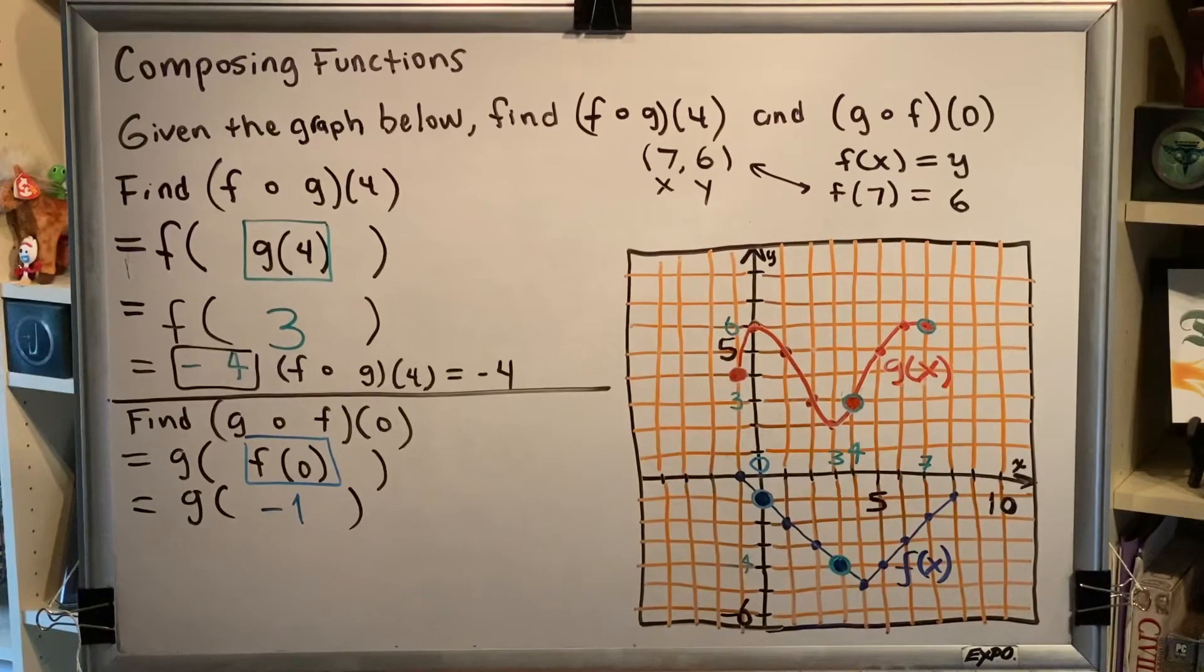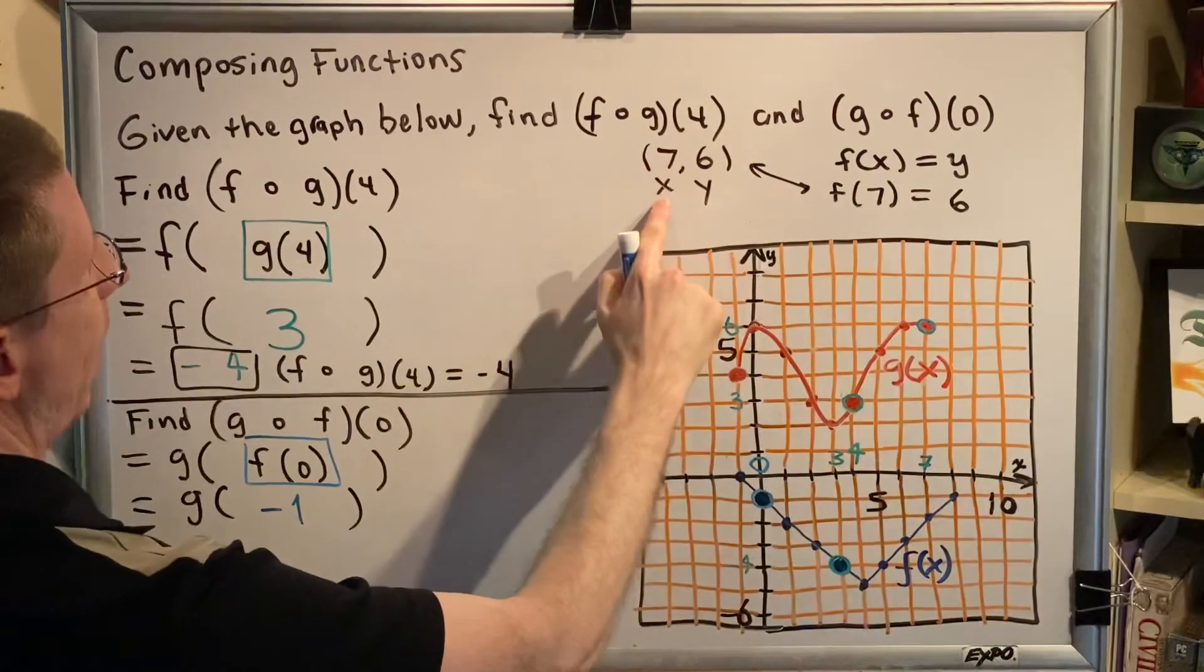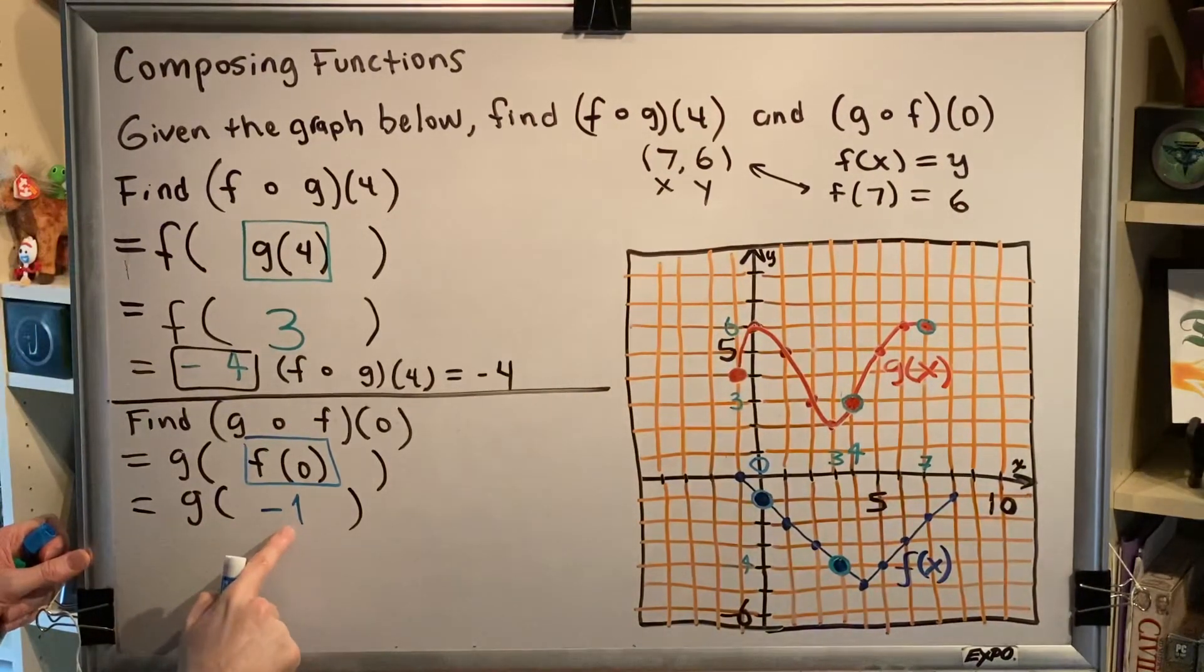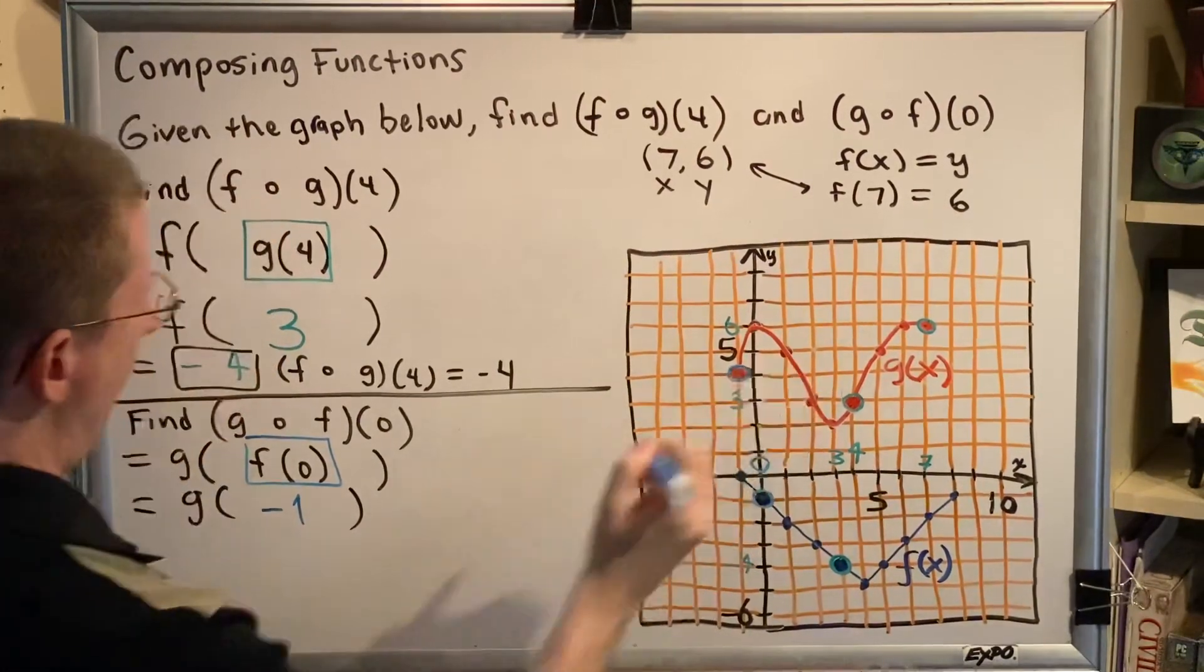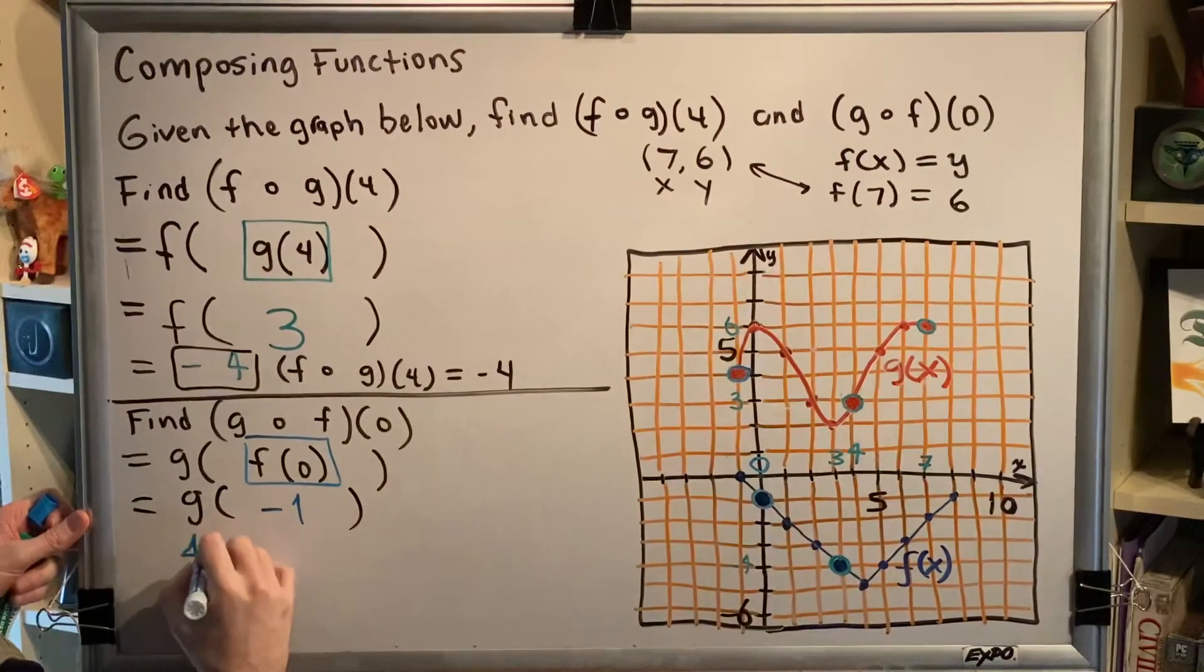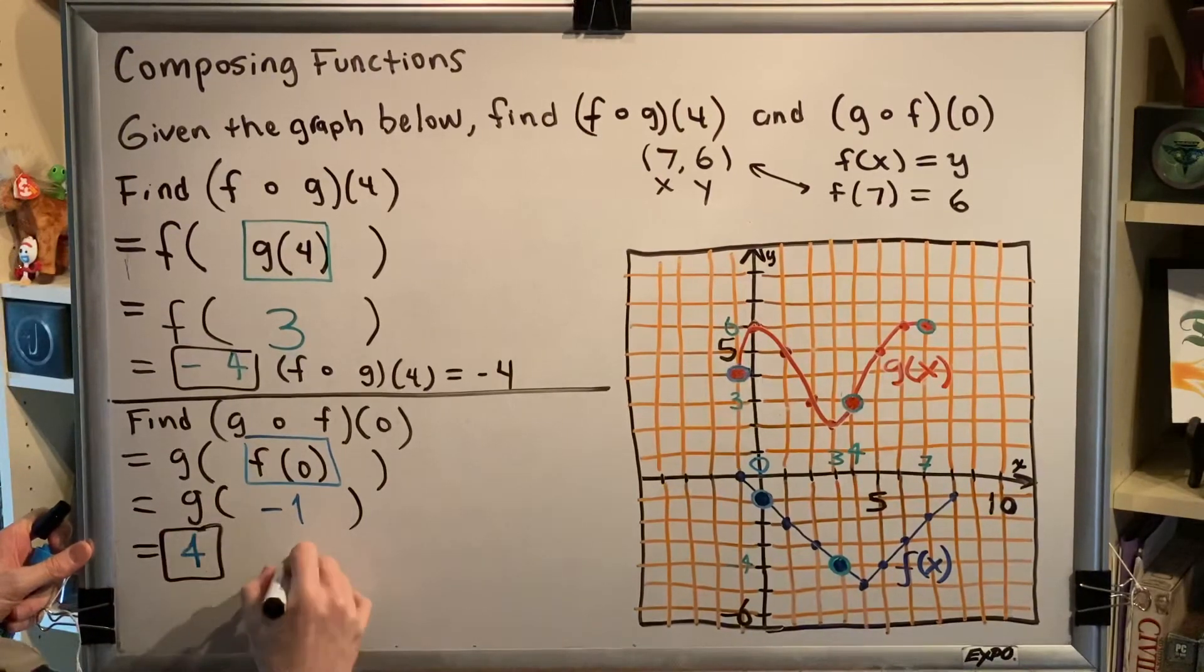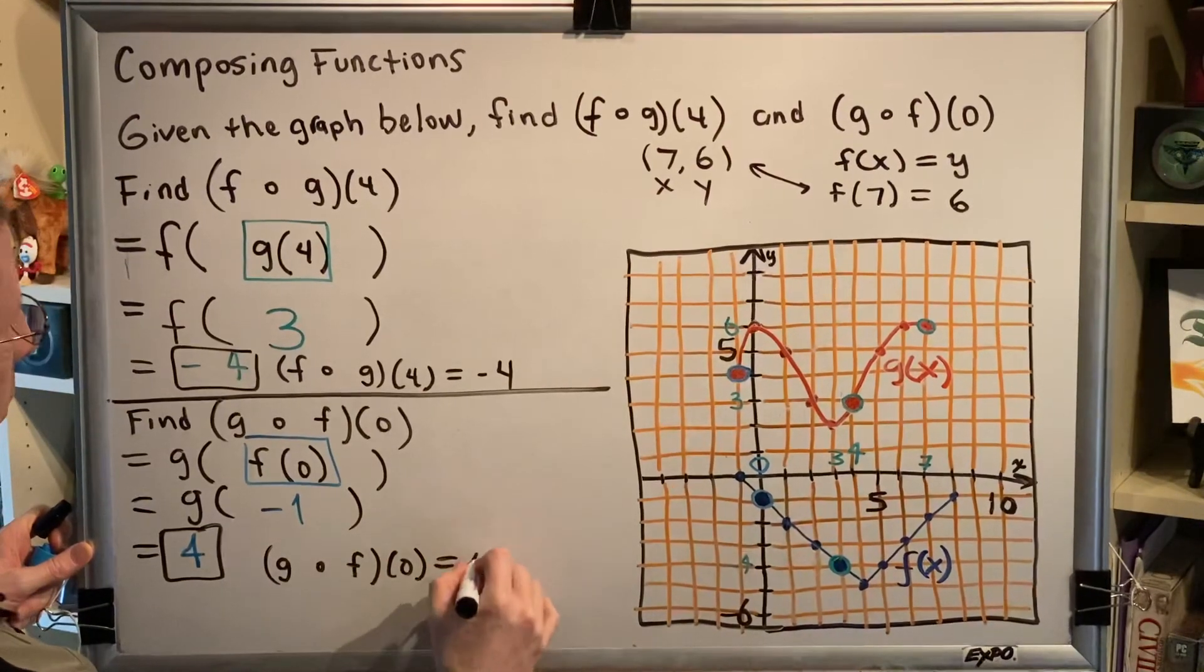Everything else about the problem is copied down around it. The next step is negative 1 is in the parentheses, which makes it an input. It makes it an x value. So I need to go to function g, which is my red curvy graph, and I need to find the point with an x value of negative 1. That would be this point right here. And then g of negative 1 would be its y value, which we can see is 4. So we get our final answer, 4. And if you prefer, instead of just writing 4, you can write g composed with f of 0 equals 4. Both are acceptable.